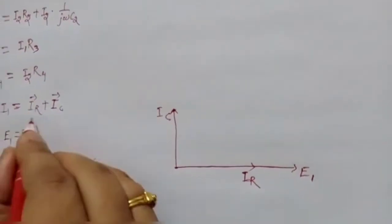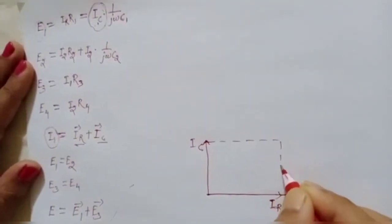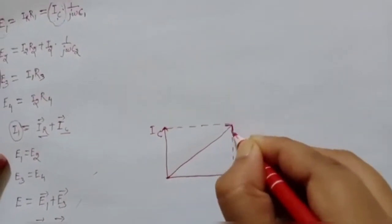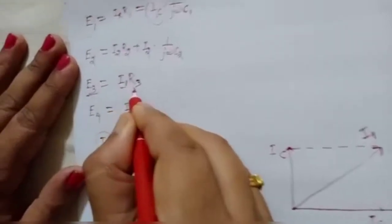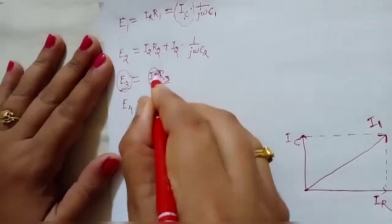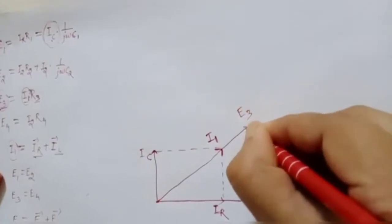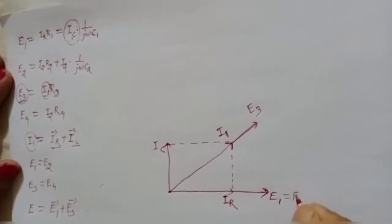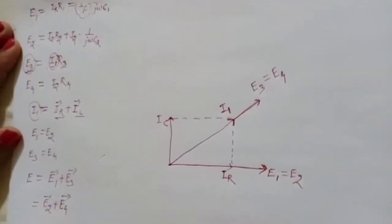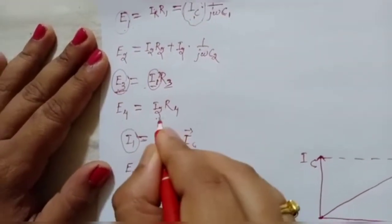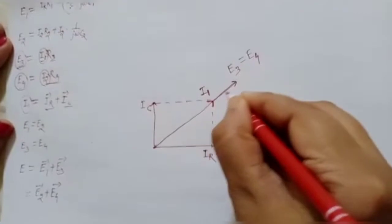The phasor sum of IR and IC gives us I1. Since E3 = I1·R3, and this is a resistive branch, E3 is drawn in phase with I1. We know E1 = E2 and E3 = E4. Since E4 = I2·R4, which is also resistive, I2 is drawn in phase with E4.